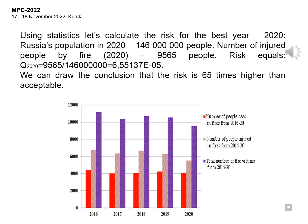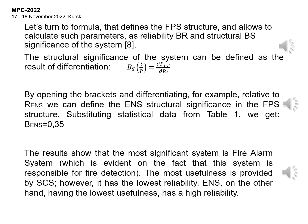Using statistics, let's calculate the risk for the best year, 2020. Russia's population in 2020 is 146 million people. The number of injured people by fire is 9,565 people, and the risk equals 6.5513705 × 10⁻⁵. We can draw the conclusion that the risk is 65 times higher than acceptable.